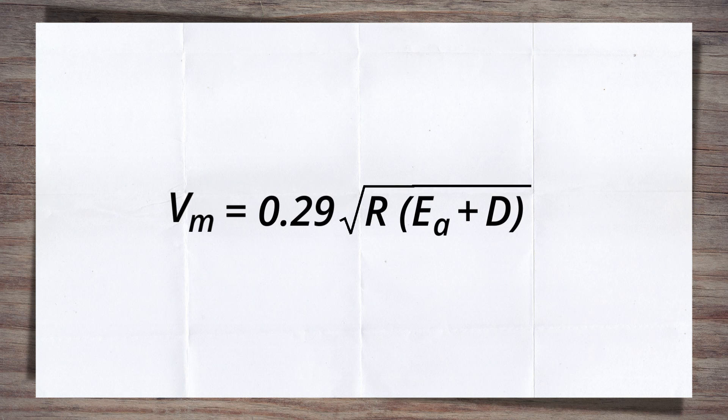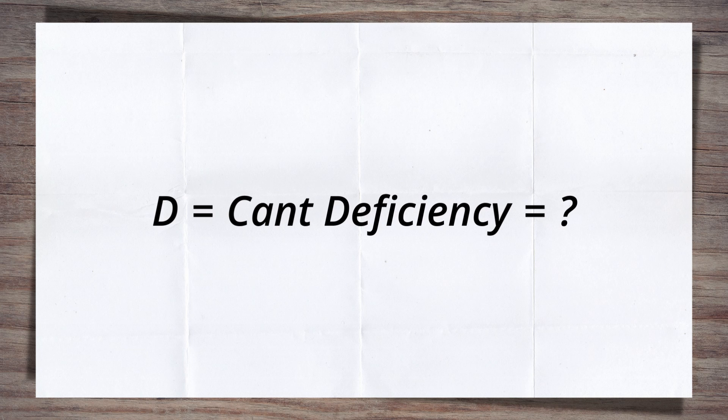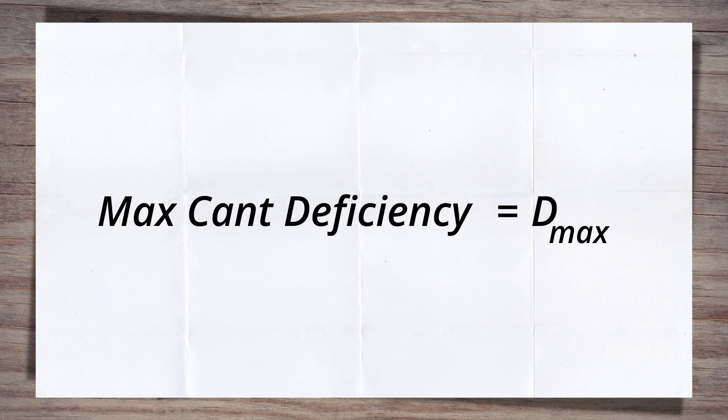But what do we use for the cant deficiency value? Well, given we are looking, at least initially, at increasing the speed but making no changes to the current track, we'll use the maximum cant deficiency value allowed by the standard. Let's call this Dmax.